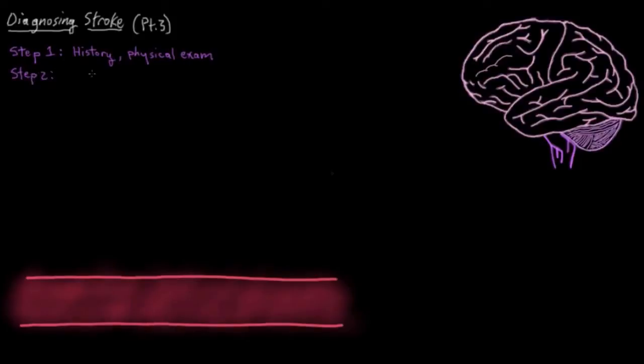Step two is to do some imaging, like CT scanning or MRI, to directly look at the brain to see what's going on with its blood supply. This is actually probably the most useful step in diagnosing stroke.